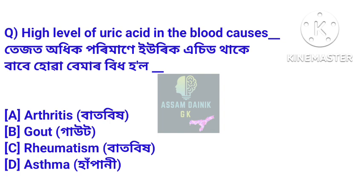Next question: High level of uric acid in the blood causes which disease? When uric acid is present in high amounts in the blood, it causes gout. A person suffering from this disease experiences joint pain.